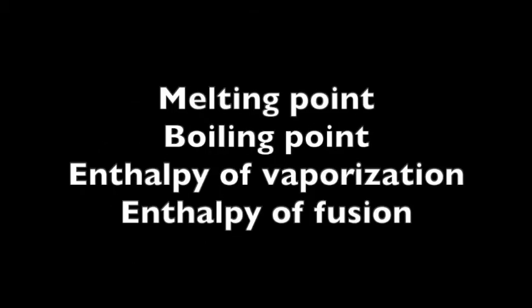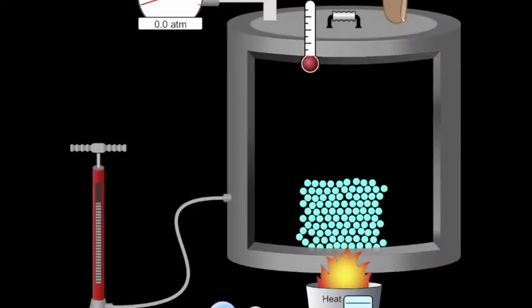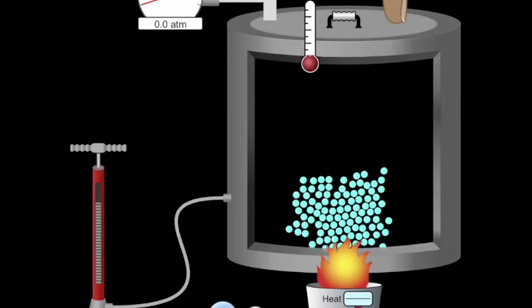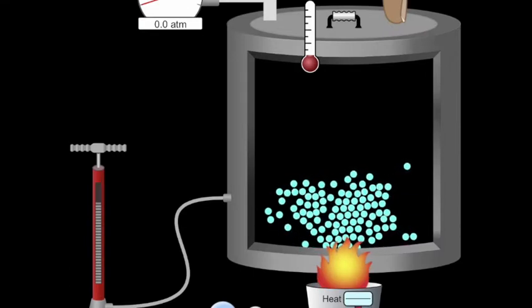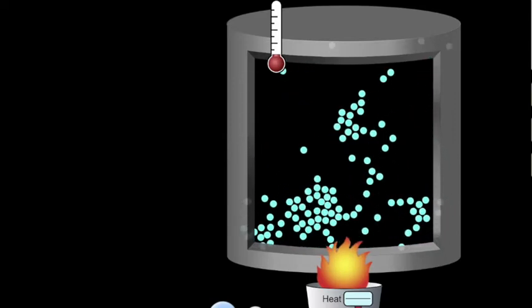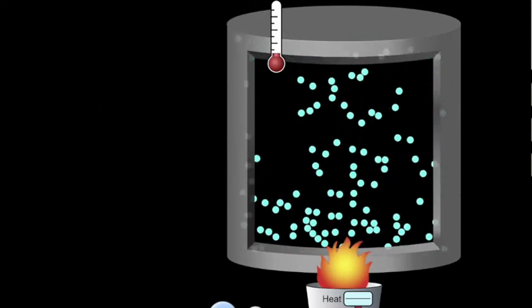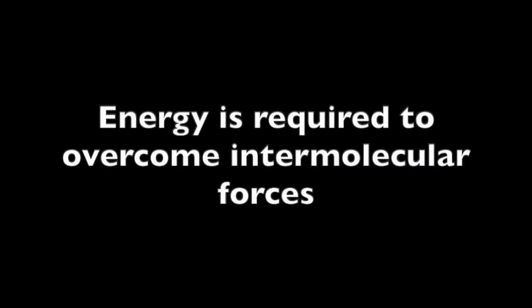Let's start by looking at melting point, boiling point, enthalpy of vaporization, and enthalpy of fusion. As you probably know, it takes energy to change a substance from a solid to a liquid and from a liquid to a gas. A lot of this energy comes from the energy required to overcome the intermolecular attractions between molecules.